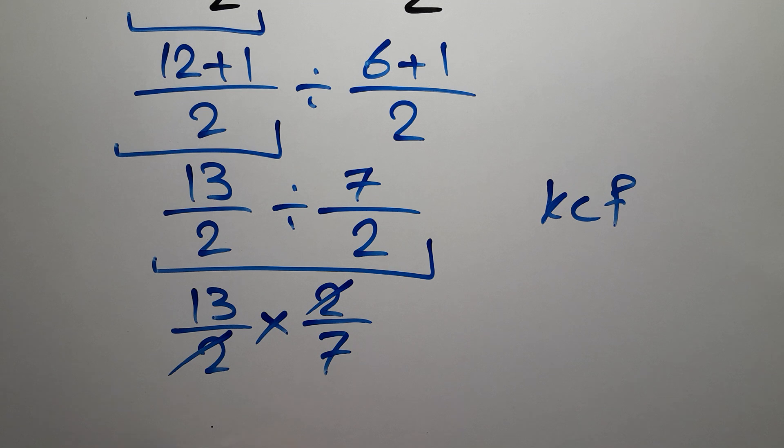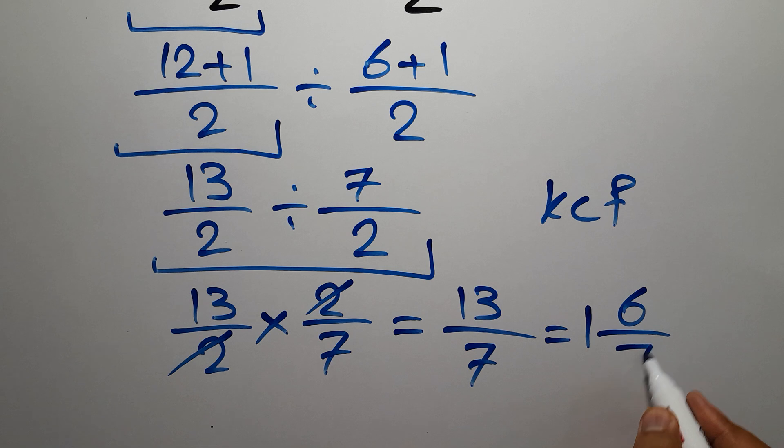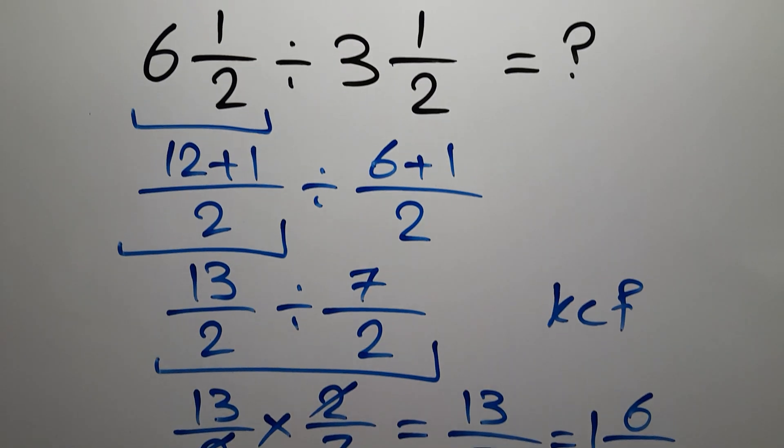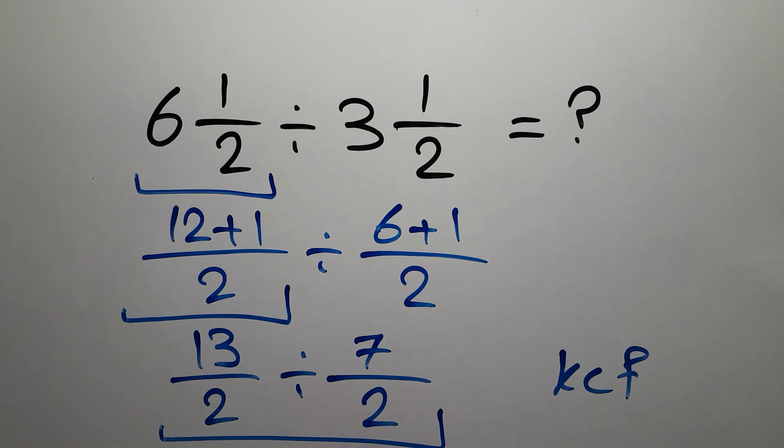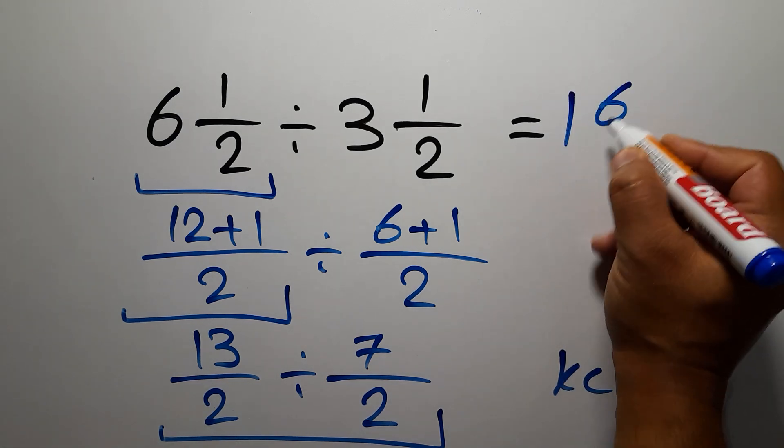These two and these two can cancel each other out, so we have just 13 over 7. 13 over 7, or 1 and 6 sevenths, and this is our final answer to this problem. The correct answer is 1 and 6 sevenths.